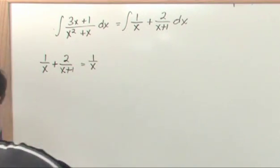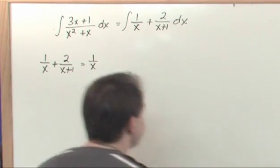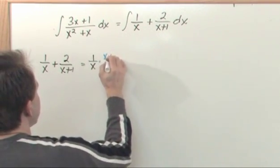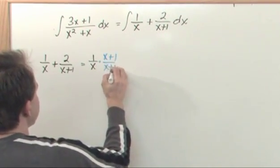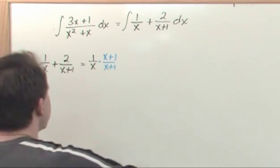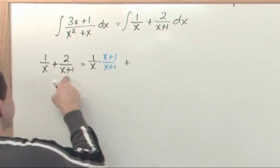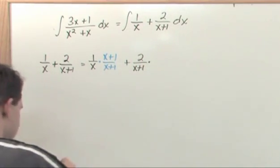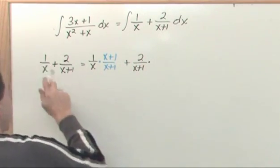Well, I could take 1/x, and I could multiply it by a conversion factor, (x+1)/(x+1), because I'm trying to form a common denominator here. And then I could take the second piece, 2/(x+1), and I can multiply it by x/x.